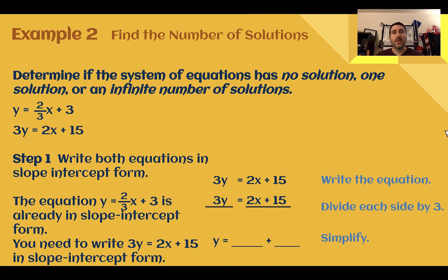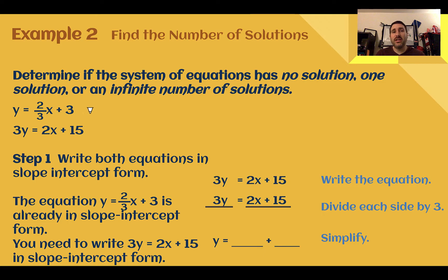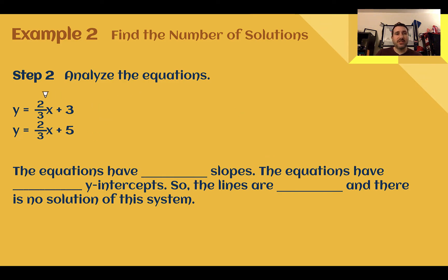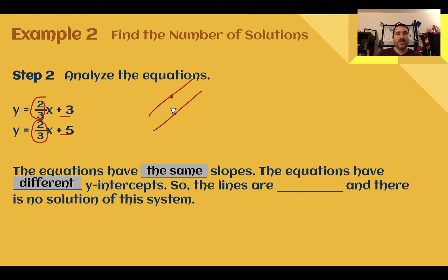Example two: find the number of solutions. Determine if the system of equations has no solution, one solution, or an infinite number of solutions. We're given y equals two-thirds x plus three and three y equals two x plus 15. Problems like this are usually written in different formats, and you need to change one into the other. Let's change the second one into slope-intercept form — divide both sides by three. That gives y equals two-thirds x plus five. Now analyzing the two equations: I see a slope of two-thirds and again a slope of two-thirds. Same slopes, but different y-intercepts — one starts at positive five, one at positive three. These are parallel lines. There is no solution to the system.